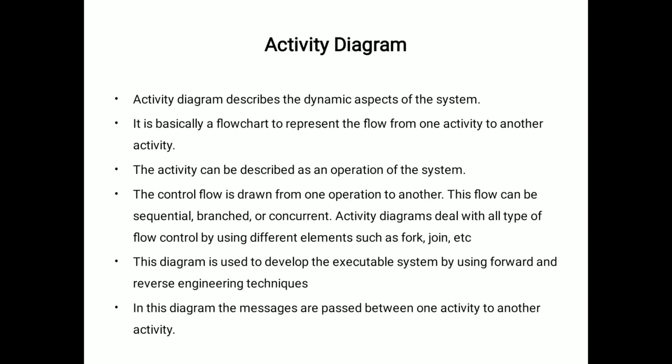The control flow is drawn from one operation to another. This flow can be sequential, branched, or concurrent. Activity diagrams deal with all types of flow control by using different elements such as fork, join, etc. This diagram is used to develop the executable system by using forward and reverse engineering techniques. In this diagram, the messages are passed between one activity to another activity.